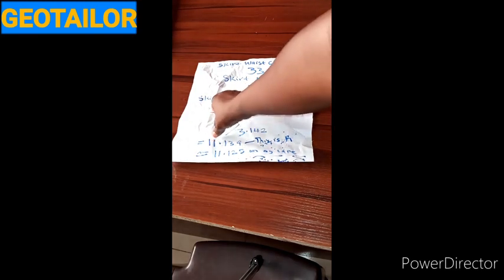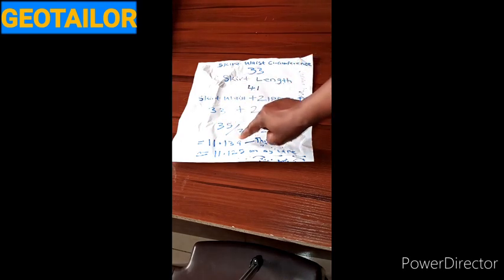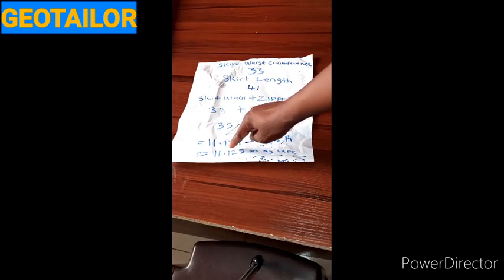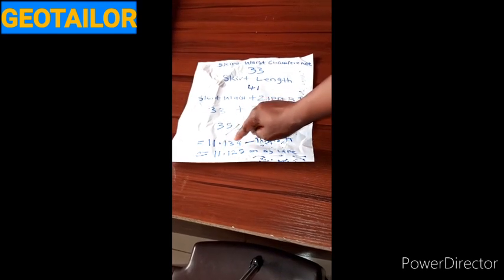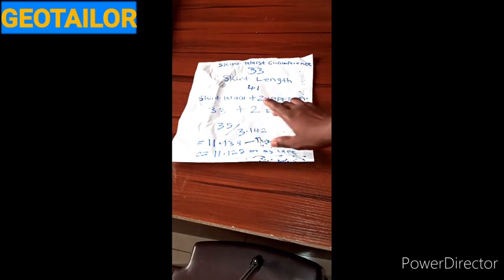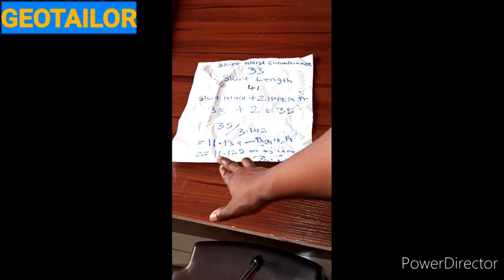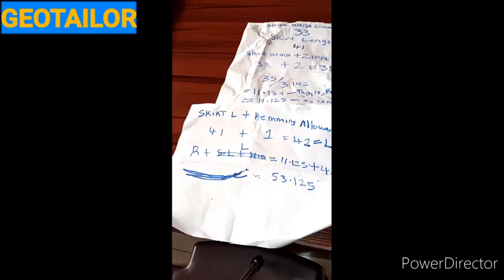After dividing, I got 11.139, which is approximately 11.125 on my tape measure. If you don't know how to read a tape measure, I have a tutorial on that — I'll link it in the description. So my R is 11.125.